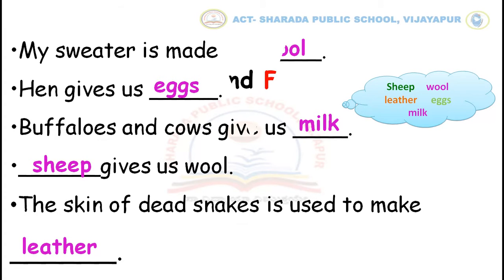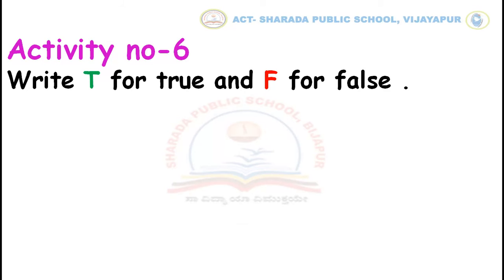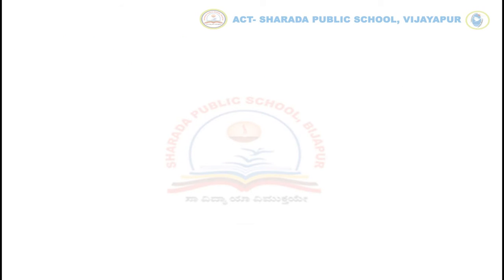Now let us solve activity number 6: write T for true and F for false. I have given some sentences. You have to read them and write your answer in front of the sentence.